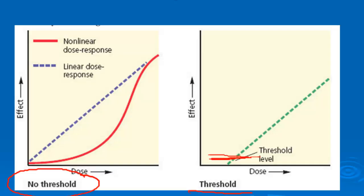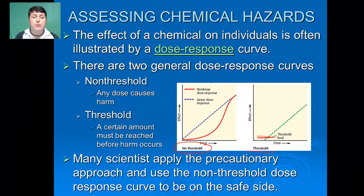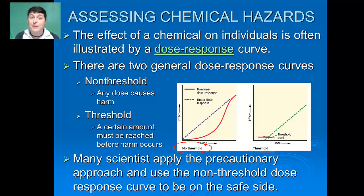Many scientists will want to apply the precautionary approach and use the non-threshold dose-response curve to be on the safe side, because at low doses we don't know what the potential impact will be, especially since chemicals don't exist by themselves in nature. There could be other chemicals that amplify the impacts of certain chemicals, and so as a result of that synergy, a low dose could actually have a really negative impact under certain conditions.